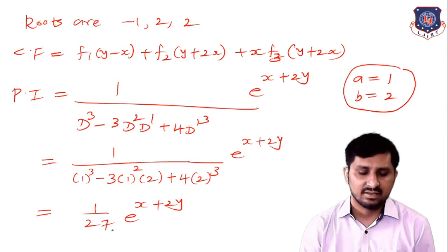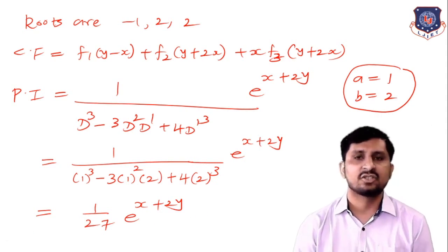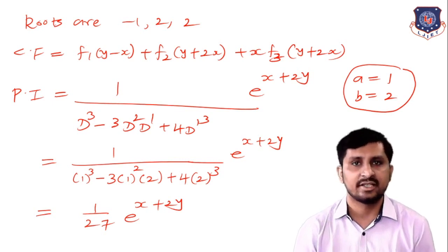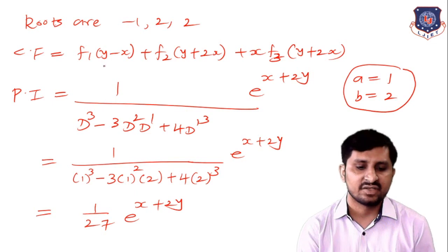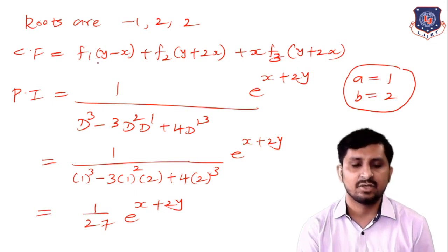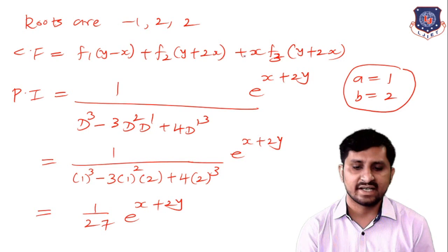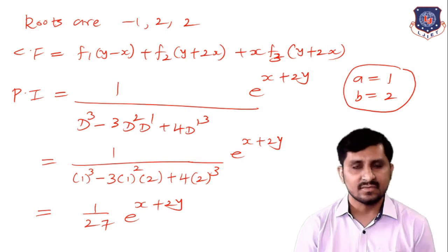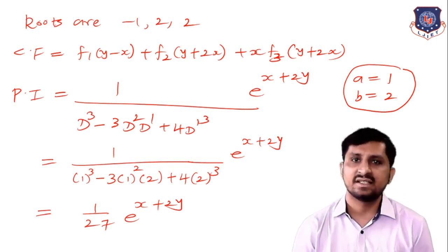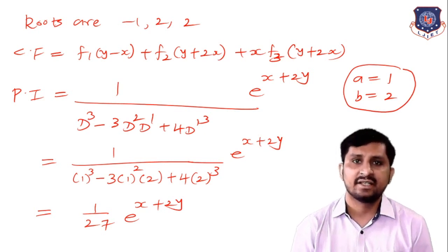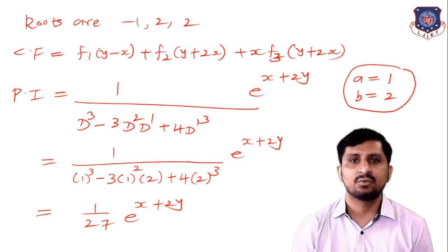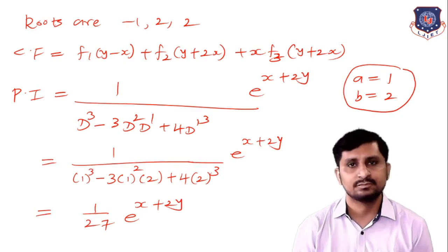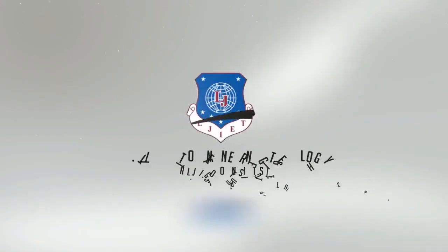The general solution is z = f₁(y - x) + f₂(y + 2x) + x·f₃(y + 2x) + (1/27)e^(x + 2y). In today's lecture, we discussed Case 1 for finding the particular integral when f(x,y) = e^(ax+by), and solved several examples. Thank you.